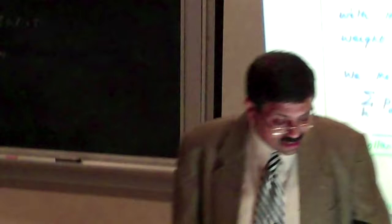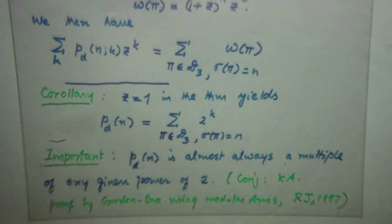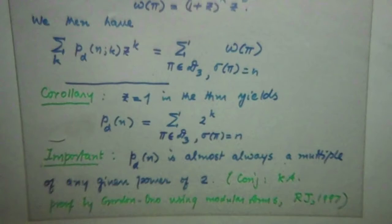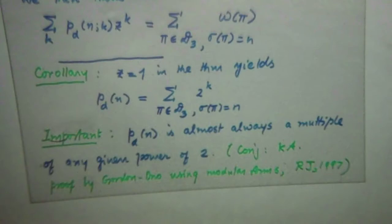This is actually a very interesting theorem. I just want to show you one consequence. Suppose I put z equal to 1 — then I'm counting the partitions with gap at least three between the parts with weights which are powers of 2. So I have a 2-adic identity representing partitions into distinct parts in terms of these powers of 2.